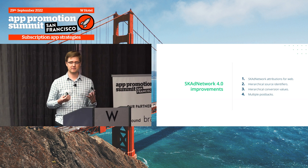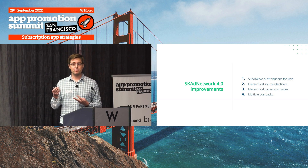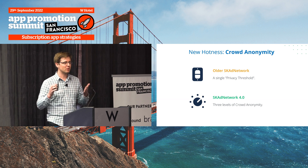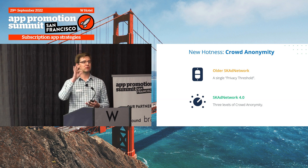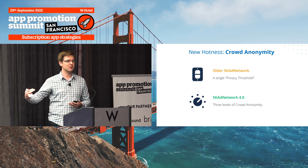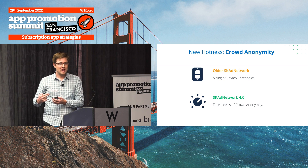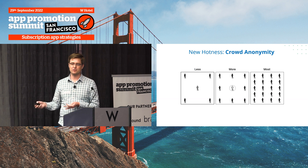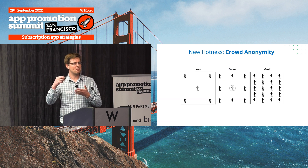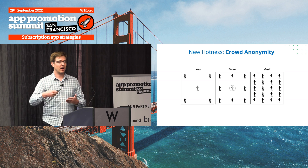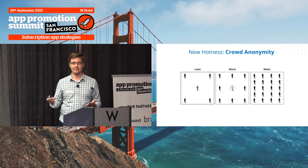There are four major improvements in SKAN 4.0. But before we go through each of them, I need to introduce the concept of crowd anonymity. This is Apple's term. In older versions of SKAdNetwork, you had one privacy threshold — pass it and you got more information. In SKAN 4.0, it's no longer just one threshold. Now there are three different groups users can fall into: less, more, or most. As you get more users in the campaign, Apple progressively unveils more information about how your campaign is performing. It's no longer all or nothing. Remember this concept — it plays into all the other improvements.